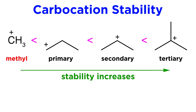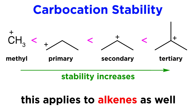So the methyl cation would be the least stable carbocation possible, followed by a primary carbocation with one alkyl group, then a secondary carbocation with two alkyl groups, and the most stable would be a tertiary carbocation with three alkyl groups.